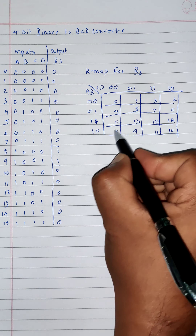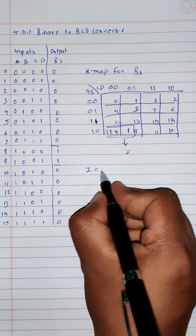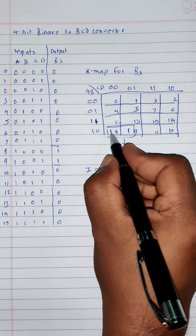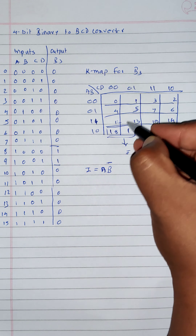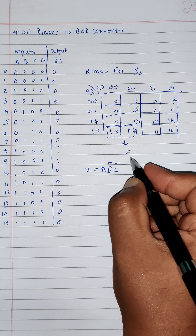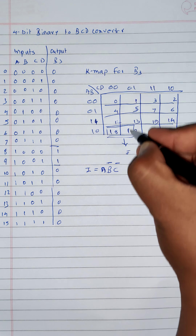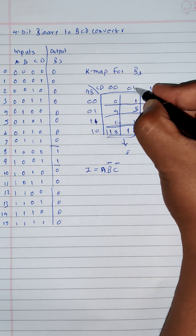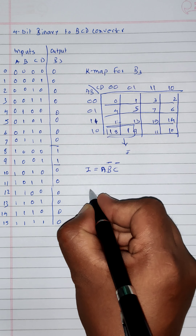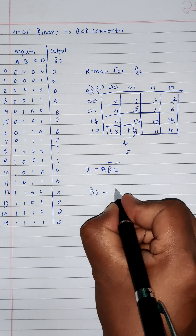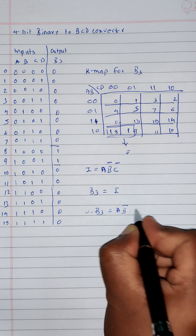So let's write the equation of group number 1. For these 2 ones, A is equal to 1, so we will get A. B is equal to 0, so we will get B bar. C is equal to 0, so we will get C bar. D is changing its value — sometimes it is 0, sometimes it is 1 — so we will cancel that and not take it in the equation. From group number 1, we got A, B bar, C bar, and the value of B3 is equal to group number 1. Therefore, B3 = A · B̄ · C̄.